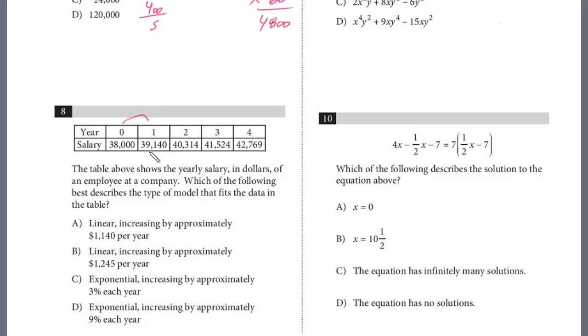We see that the difference from 38,000 to 39,140 is 1,140. Now the only way it's linear is if every increase of 1 is 1,140. If you look here, you don't even need to use your calculator, but 1,140, this would have to be 280. It doesn't make any sense with the 314, so we know it's not linear.